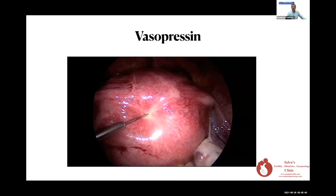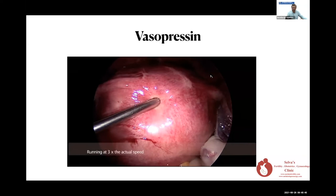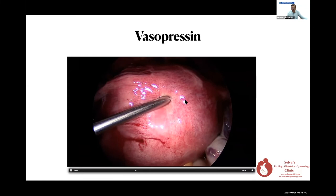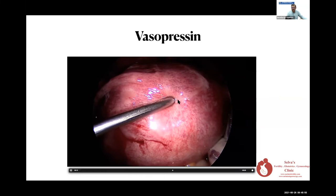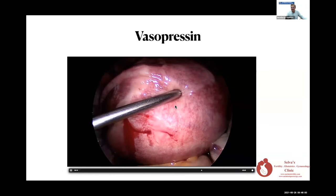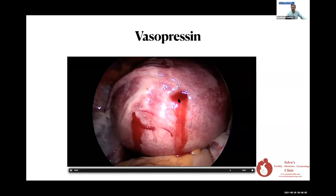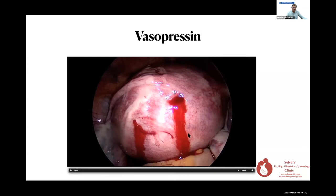There are many ways of injecting vasopressin. This technique I saw about 10 years ago in Germany: dilute 20 units of vasopressin in 200 cc of saline, then inject at the junction between the fibroid and the uterus — just one puncture, injecting all 200 cc into that spot. The advantage is no leakage from multiple spots, and the vasopressin and water dissect between the fibroid and uterus. The aim is to devascularize the uterus, not the fibroid — you want the uterus not to bleed. This works very well even for large fibroids and is my preferred technique.